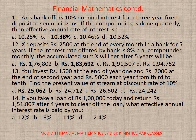Question 12: Axis deposits rupees 2,500 at the end of every month in a bank for 5 years. If the interest rate offered by the bank is 8% per annum compounded monthly, the accumulated sum X will get after 5 years — correct option is B — rupees 1,83,692.